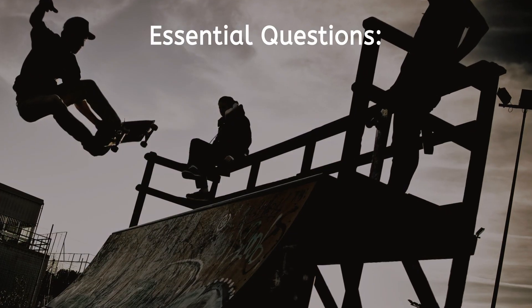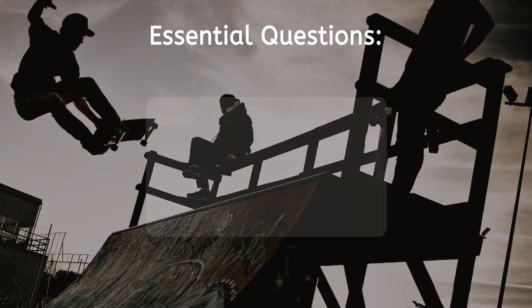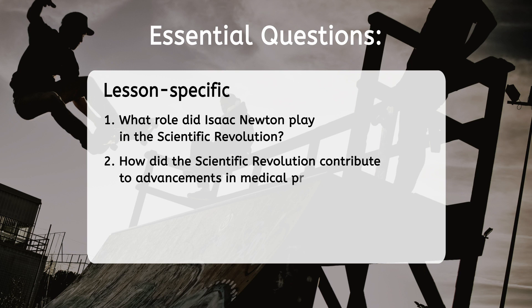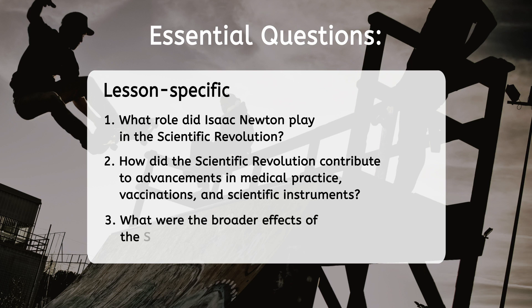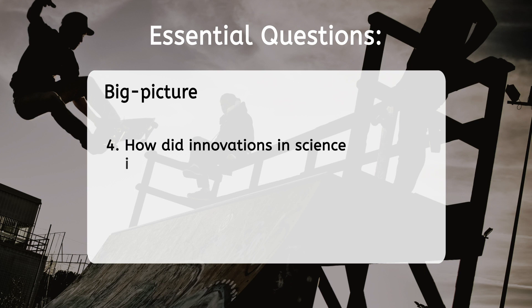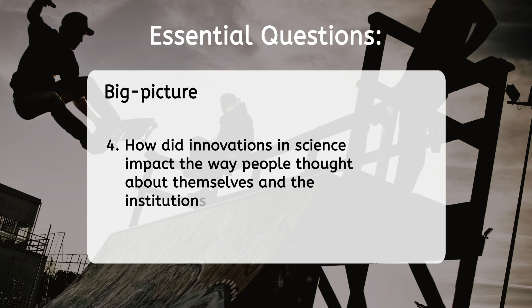Speaking of questions, let's get into ours for today. While you watch, consider the following: What role did Isaac Newton play in the Scientific Revolution? How did the Scientific Revolution contribute to advancements in medical practice, vaccinations, and scientific instruments? And what were the broader effects of the Scientific Revolution? After the video, think about the big picture question from our last lesson: how did innovations in science impact the way people thought about themselves and the institutions around them?